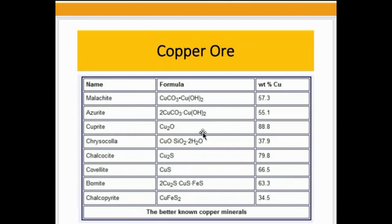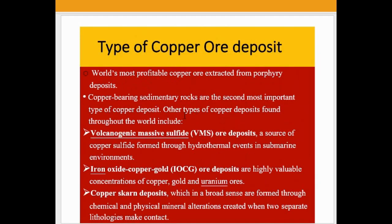Key copper ore minerals include cuprite at 88.8 percent copper, chalcocite, covellite, bornite, and chalcopyrite. These represent the major types of copper ore deposits, with porphyry deposits being the most profitable source of copper extraction.